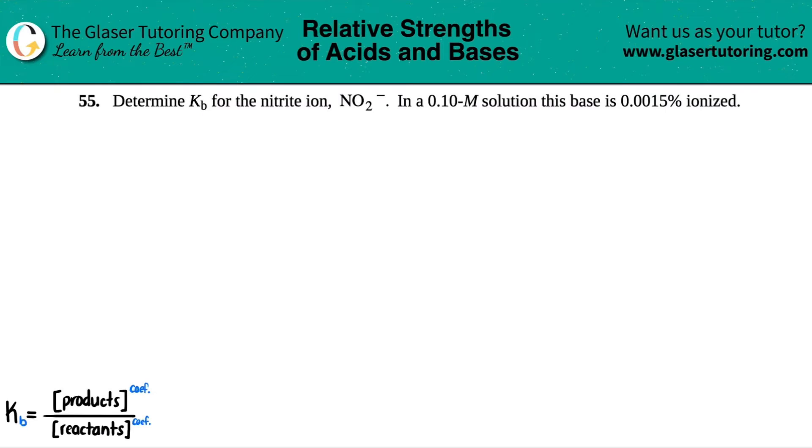Number 55. Determine the KB for the nitrite ion, NO2 minus. In a 0.10 molarity solution, this base is 0.0015% ionized. So we basically have to solve for the KB. The B in the KB stands for a base.